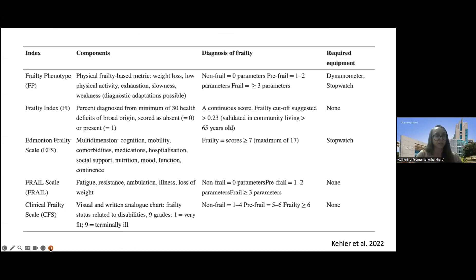Measuring frailty is quite complicated in that there are so many different measures of frailty that all have different utilities and feasibilities in clinical and research settings. Probably the most common one to hear about, especially in research, is the Fried Frailty Phenotype — a five-point measure that requires some equipment and staff time using a dynamometer and stopwatch. There are also frailty indexes that are more of a continuous scale, considering comorbidities and health outcomes.